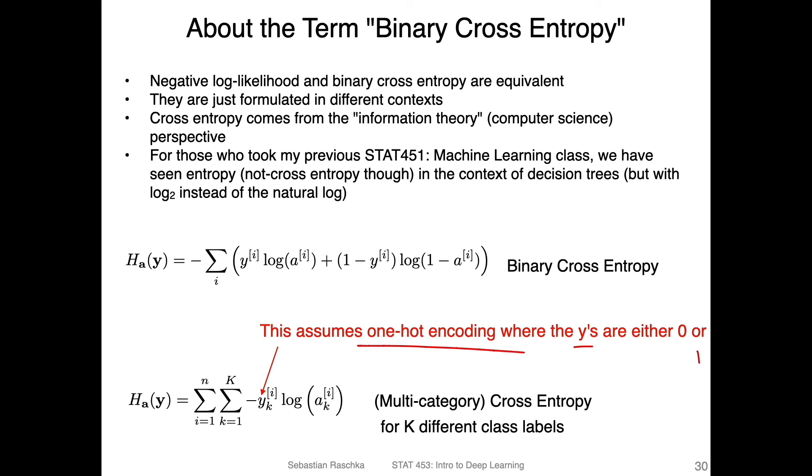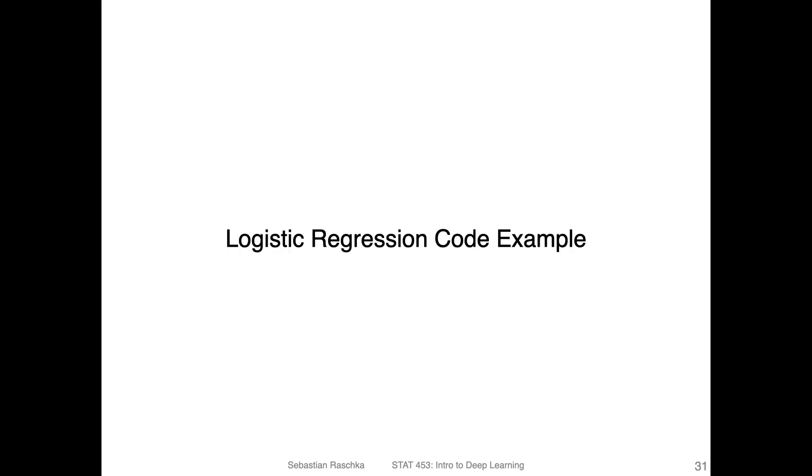So again, all I wanted to say here is the logits in deep learning usually refer to the net inputs of the layer that just comes before the output. And the term binary cross entropy and negative log-likelihood are essentially the same. Alright, so in the next video, I will show you a logistic regression code example. And then we will take a look at this multi-category cross entropy.